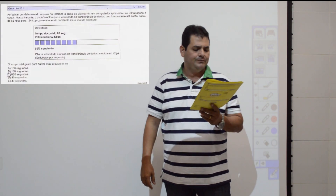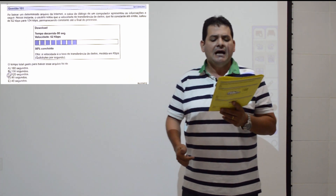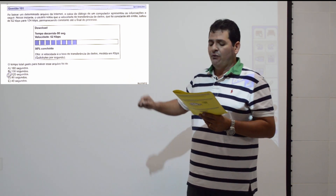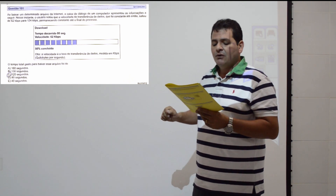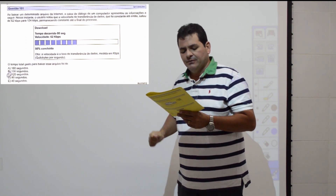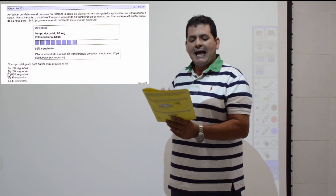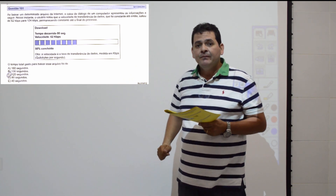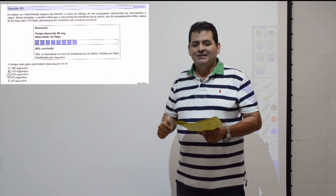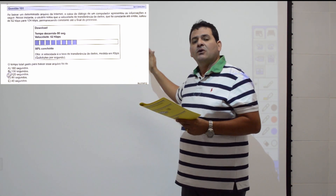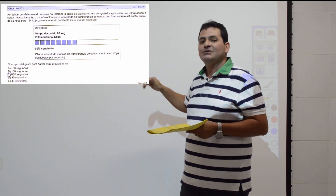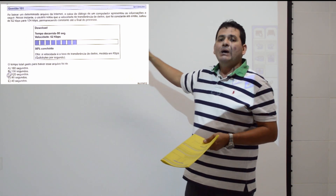Questão 151: ao baixar um arquivo, o tempo decorrido foi de 80 segundos com velocidade de 62 Kb/s. Se a velocidade dobrar para 124 Kb/s, o tempo cai pela metade. Como já foi concluído 50% do download, faltam 50%. Com velocidade dobrada, os outros 50% levam metade de 80 segundos = 40 segundos. Total: 80 + 40 = 120 segundos. Item C.